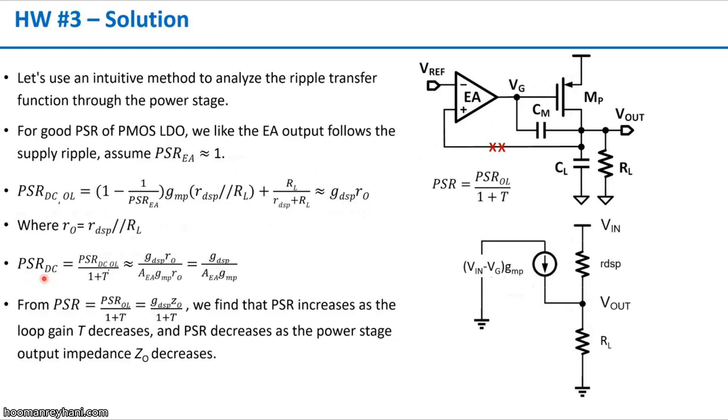For the entire LDO, the PSR at DC will be the open-loop PSR DC divided by 1 plus the loop transfer function, so it will be approximately GDSP over the EA gain times GMP. When we consider the frequency response of the PSR, we can replace RO with ZO. The loop transfer function also changes with frequency. We can find that the PSR will increase if the loop gain decreases after the 3 dB pole, and the PSR will decrease as the power stage output impedance ZO decreases.